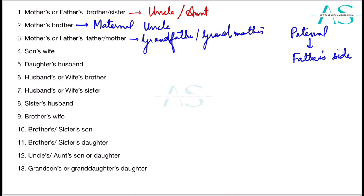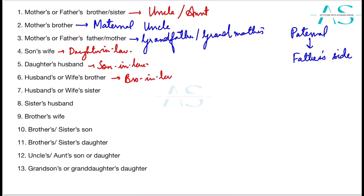Moving on, your son's wife is your daughter-in-law. Your daughter's husband is your son-in-law. Your husband's or wife's brother is your brother-in-law, and your husband's or wife's sister is your sister-in-law. Your sister's husband is also your brother-in-law, and your brother's wife is your sister-in-law.